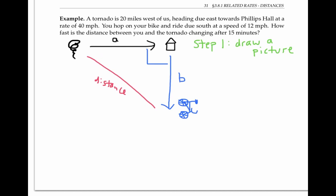And I'll let C stand for the distance between the bicycle and the tornado. The problem asks us to find how fast this distance is changing, in other words, dc/dt.